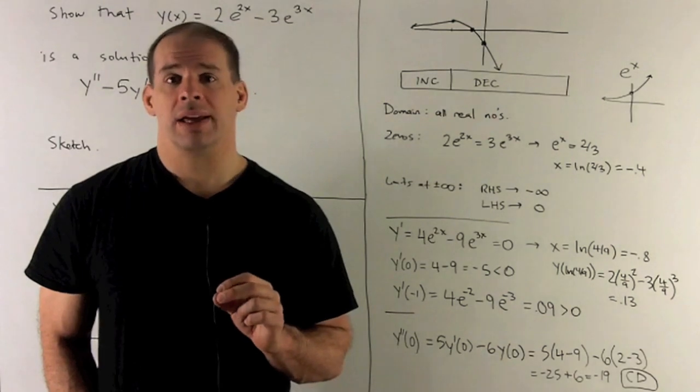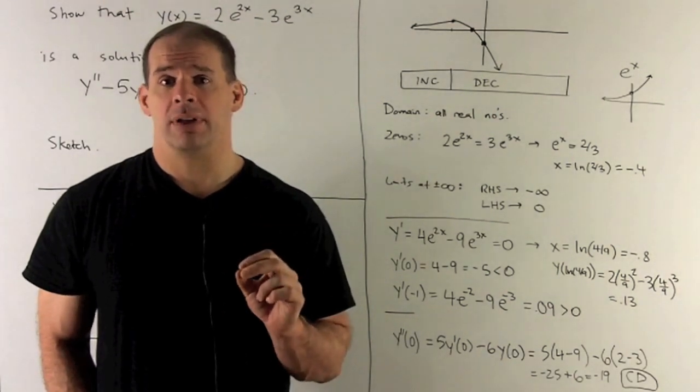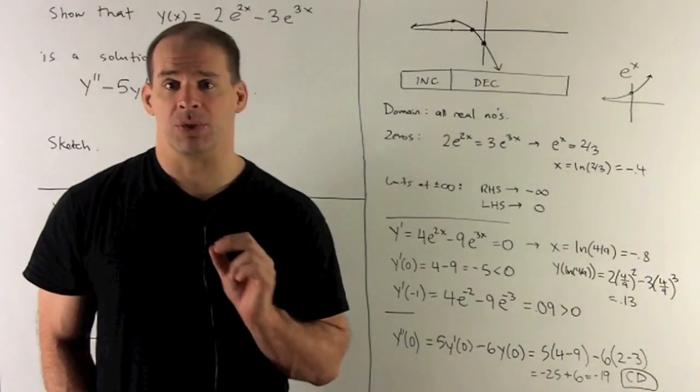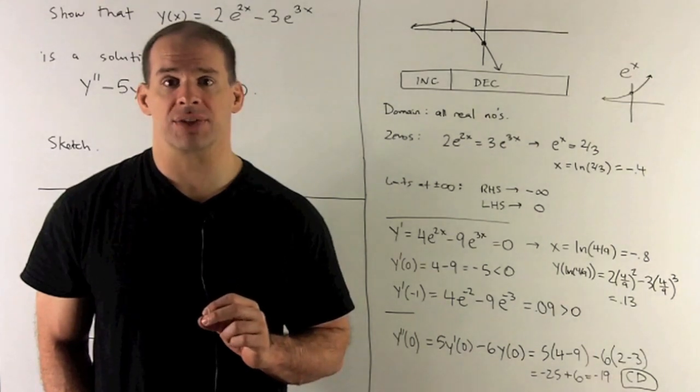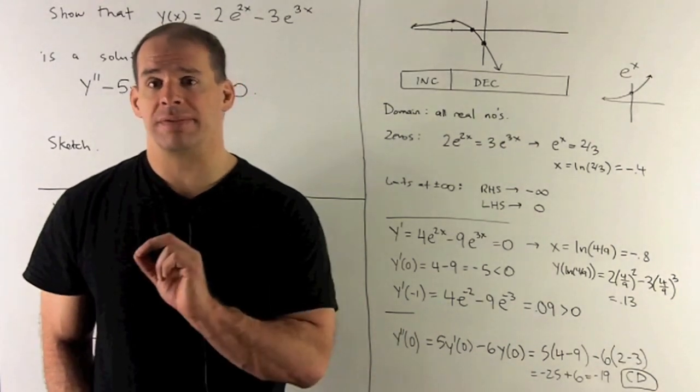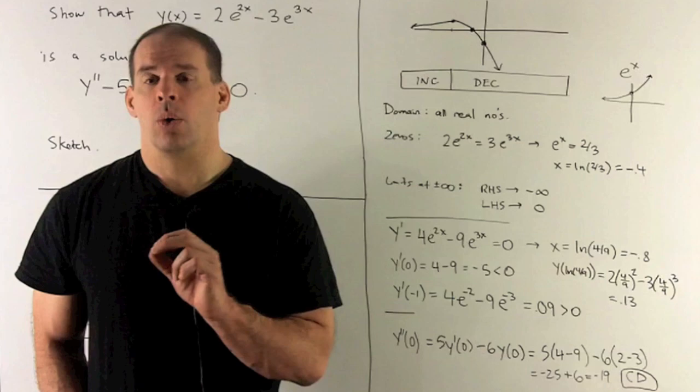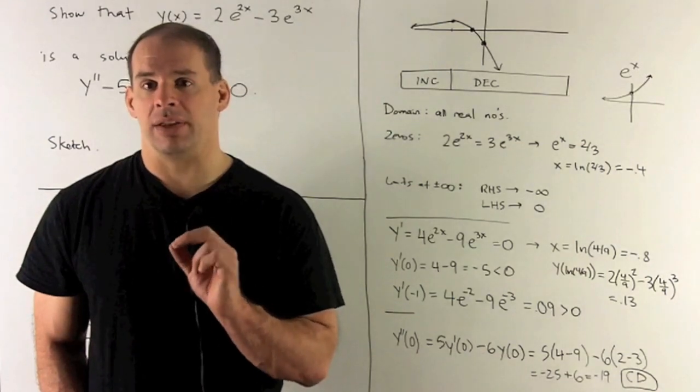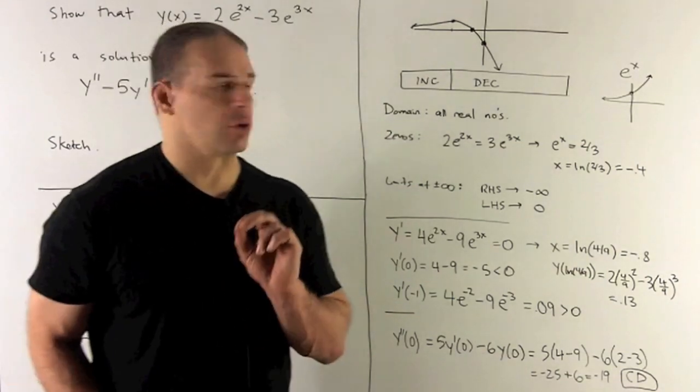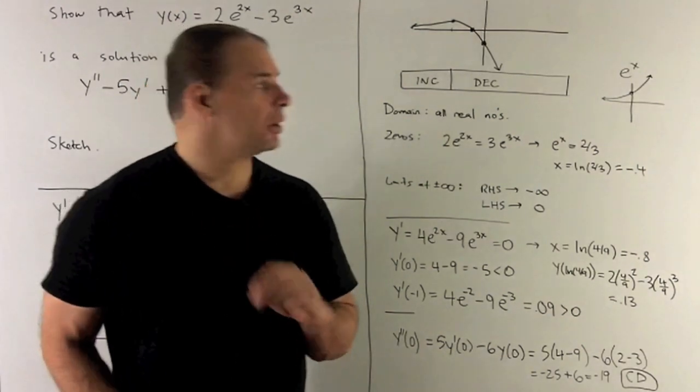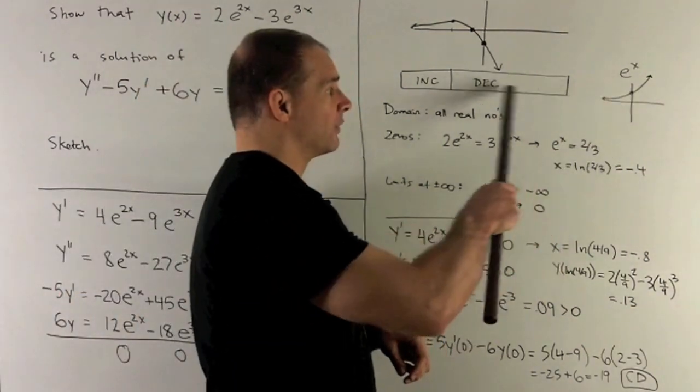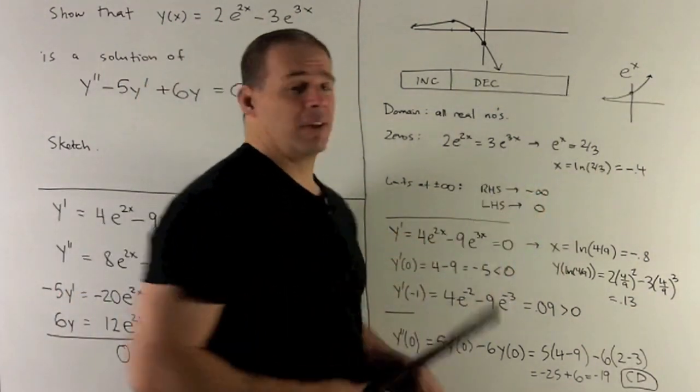What else can we do? We can take the limit as we go off to plus infinity in x, or the limit as we go off to minus infinity in x. We go off to minus infinity. Let's take a look. Well, where do e^(2x) and e^(3x) go? We take a look at the graph of e^x. We'll see that this, as I go off to minus infinity, goes off to zero.